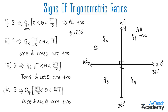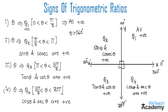In quadrant 2, only sine and its reciprocal cosecant are positive. In quadrant 3, only tan theta and its reciprocal cot theta are positive. In quadrant 4, cos theta and its reciprocal secant theta are positive. Now let me explain a simpler way to remember the signs of trigonometric ratios in respective quadrants.